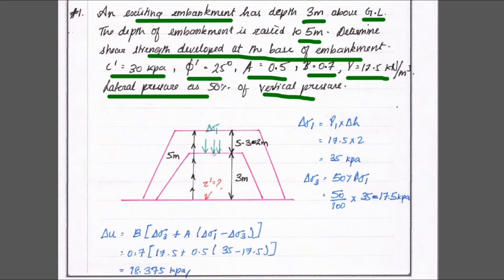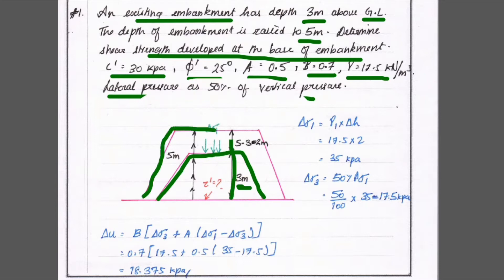First we draw the diagram. The existing embankment is at 3 meters above the ground surface, and it is raised up to 5 meters above the ground surface. So the change in height is 5 minus 3, which equals 2 meters.